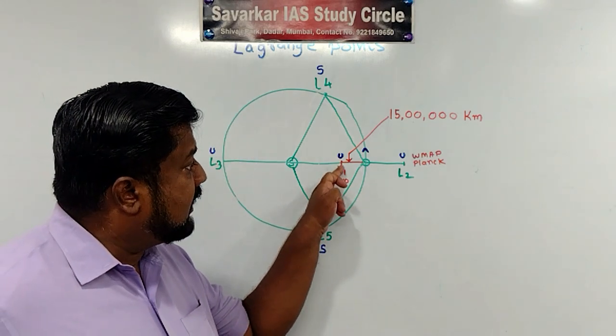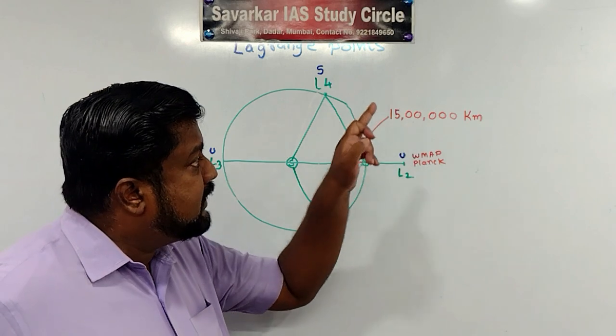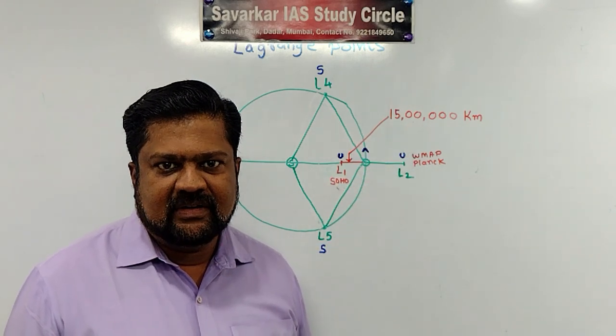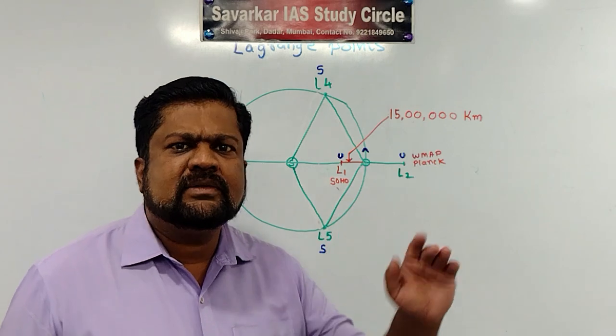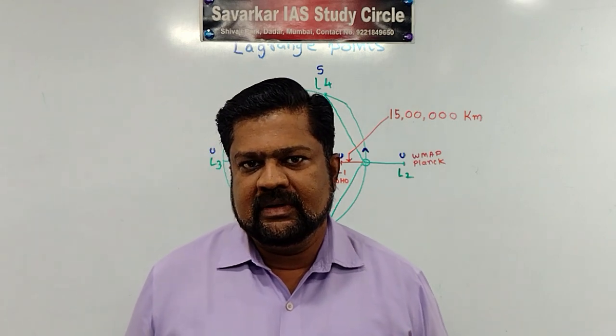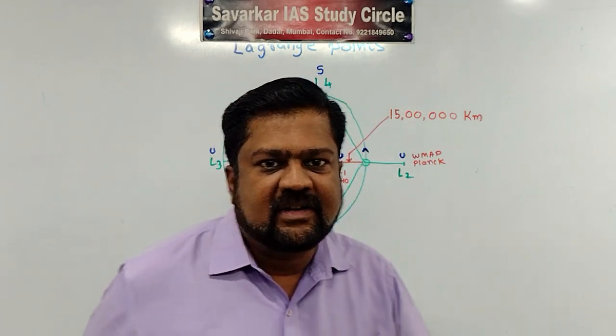But suppose point is here, L1. It is nearly 15 lakh kilometer from Earth's surface. 15 lakh kilometer. It is 1.5 million kilometer. So we are aware that even moon is not an obstacle over there.